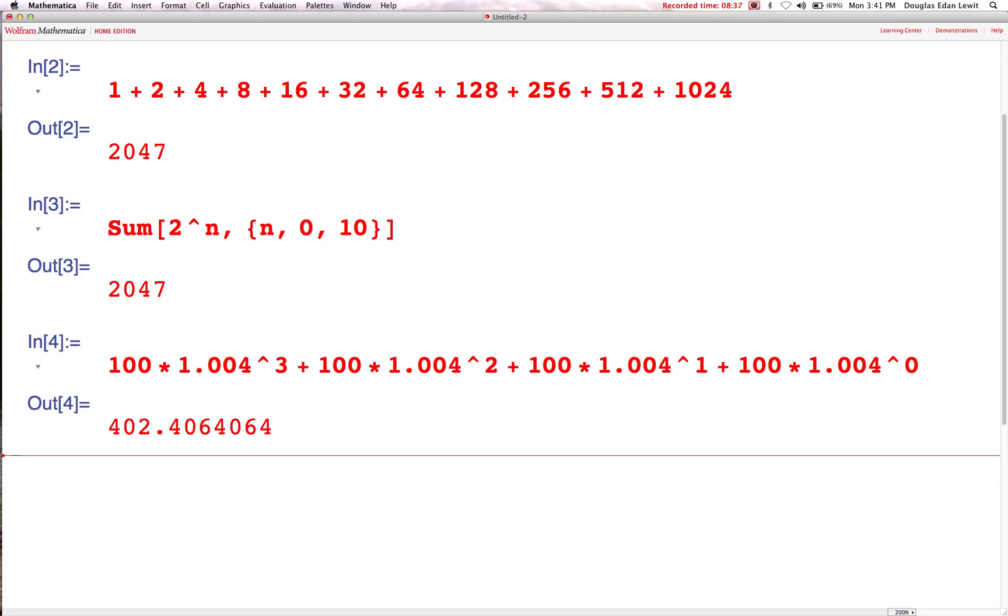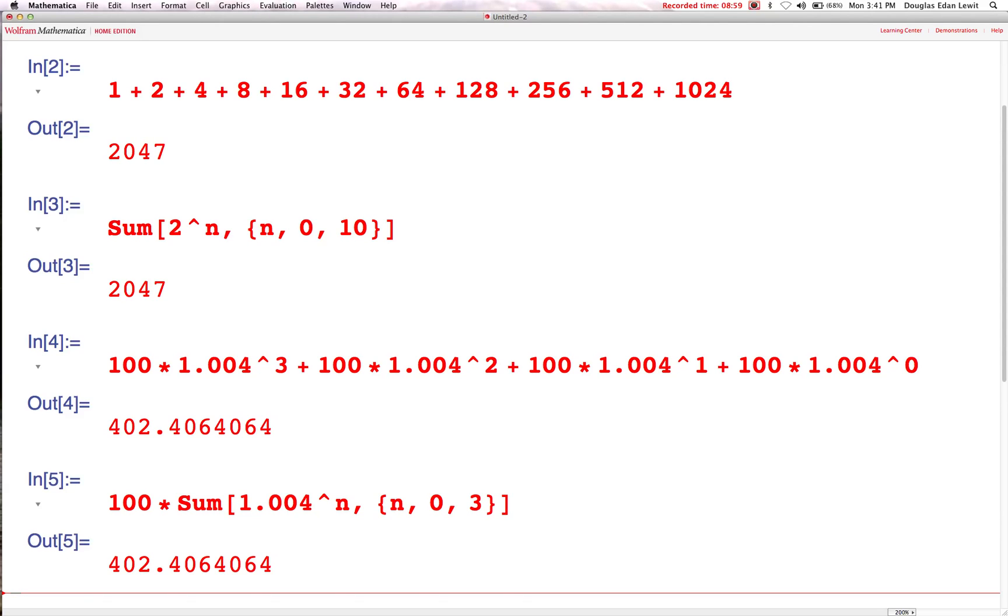There must be an easier way to do this. Okay, let's give this a shot. 100 times sum, 1.004 to the power of n. n is my argument. n is going to go from 0 to 3. What is that going to look like? Well, what do you know? It's the same answer. We have, after 3 months, $402.41.